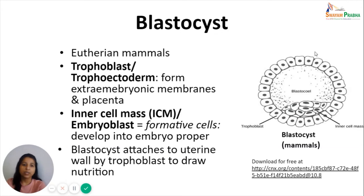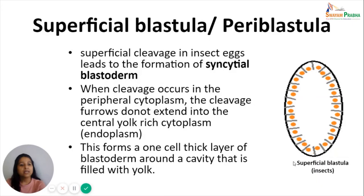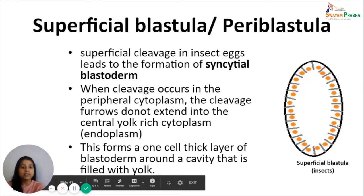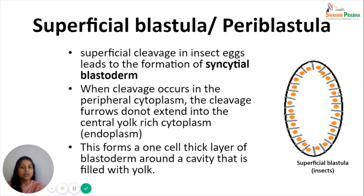The last type of blastula is the superficial blastula or periblastula, characteristic of insects. Superficial blastula is formed by superficial cleavage in insect eggs, leading to formation of a syncytial blastoderm — a large number of nuclei arranged without any division of the cytoplasm. When cleavage starts it occurs only in the peripheral cytoplasm, and the cleavage furrows cannot extend into the central yolk-rich endoplasm. This forms a one-cell-thick layer of blastoderm around a yolk-filled cavity, with virtually no blastocele in superficial blastula.